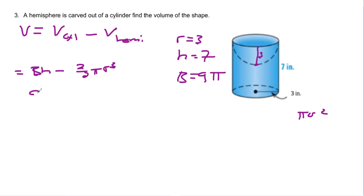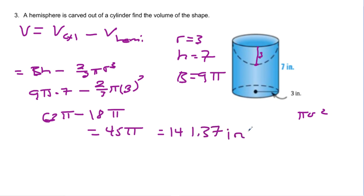So in we go. 9 pi times 7. That's going to be 63 pi. Minus 2 thirds pi to 3 to the third power, which is 27. 27 divided by 3, well, that's going to be 9. 9 times 2 is 18. So I'm going to have 63 pi minus 18 pi. And that gives me 45 pies. Ooh, raspberry pies. Is equal to 141.37 inches cubed. And we have happy days.